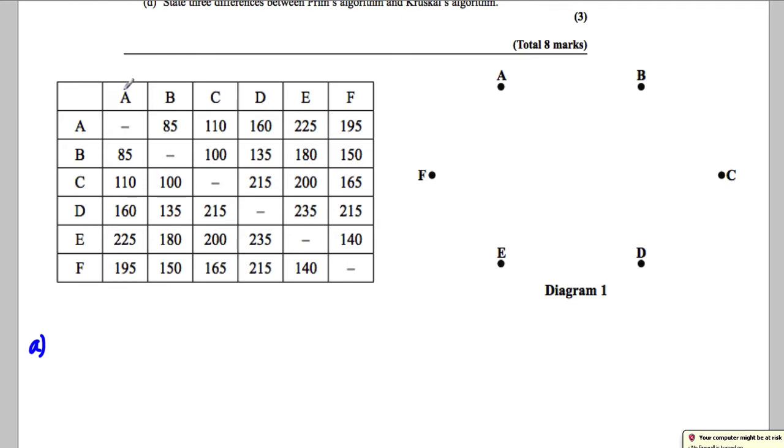So it says start at A. So the first thing we do is we call A number one and we cross out row A like that. Now we look down the numbered columns and we find the smallest and the smallest here is clearly AB. So AB is our next one. So we write AB is equal to 85.